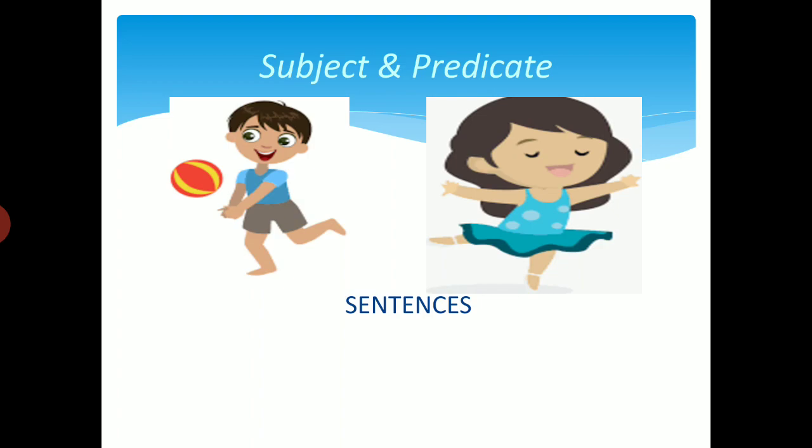We have also discussed the four kinds of a sentence. First is declarative, which simply tells us about something. Next is interrogative, which are used to ask question.